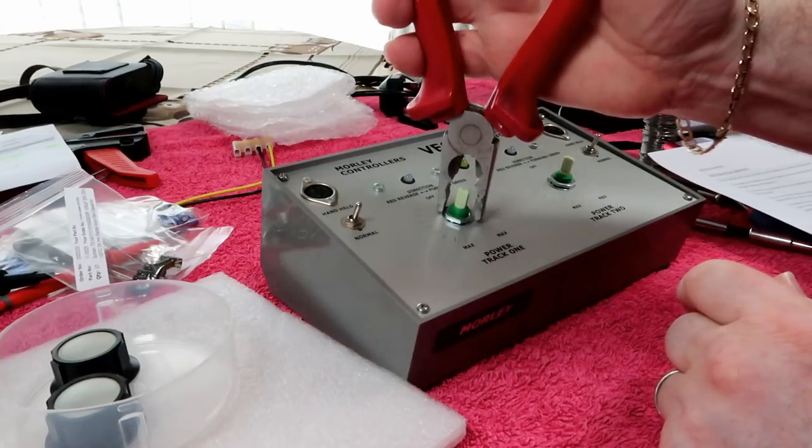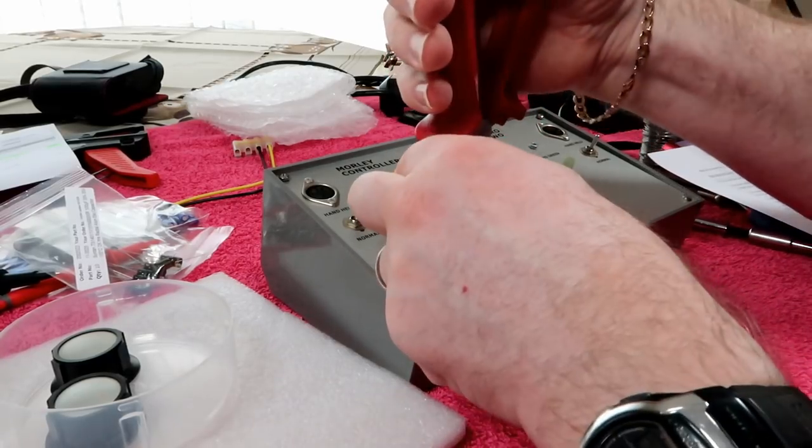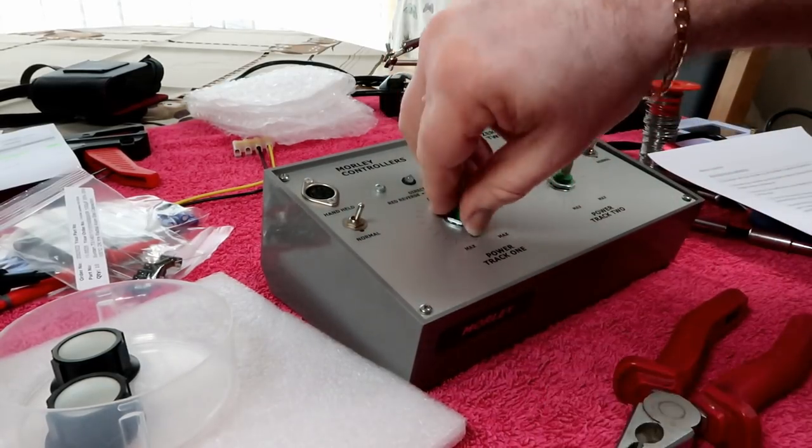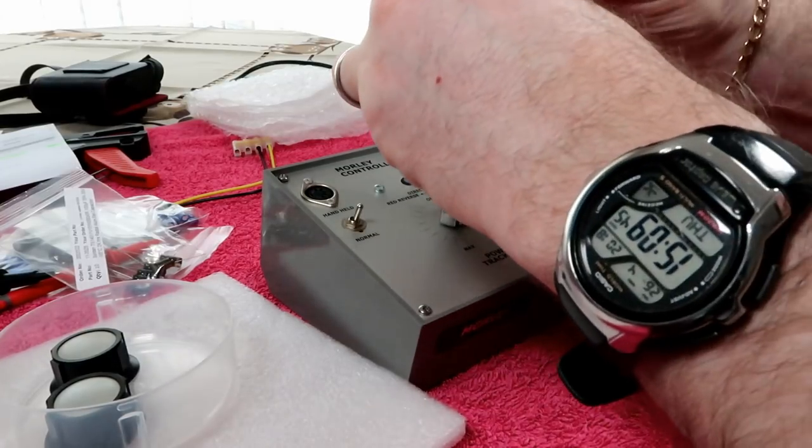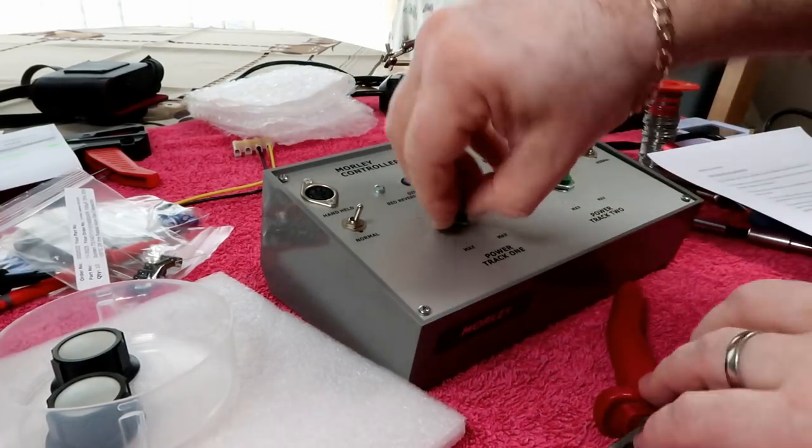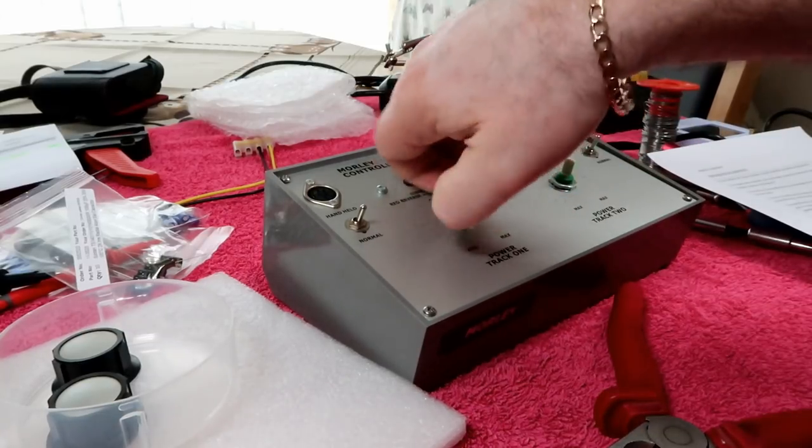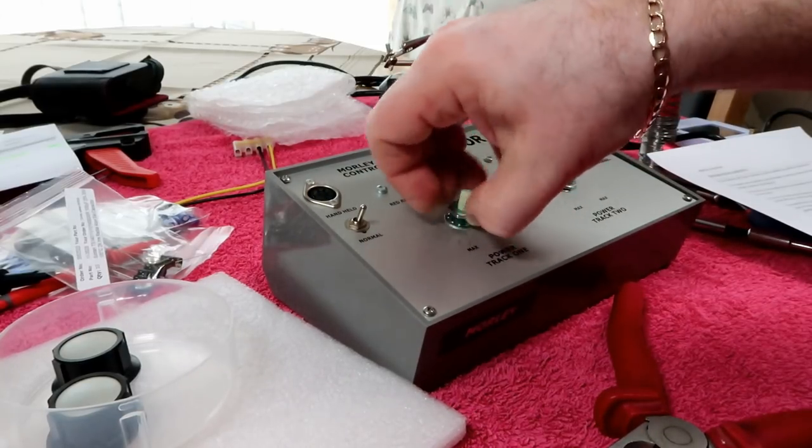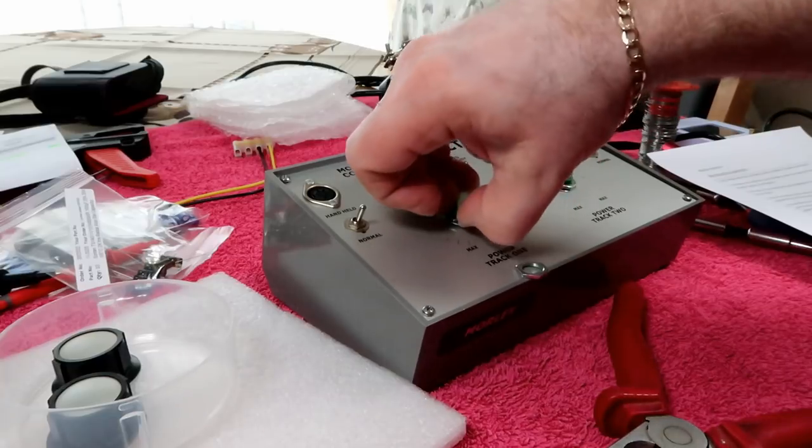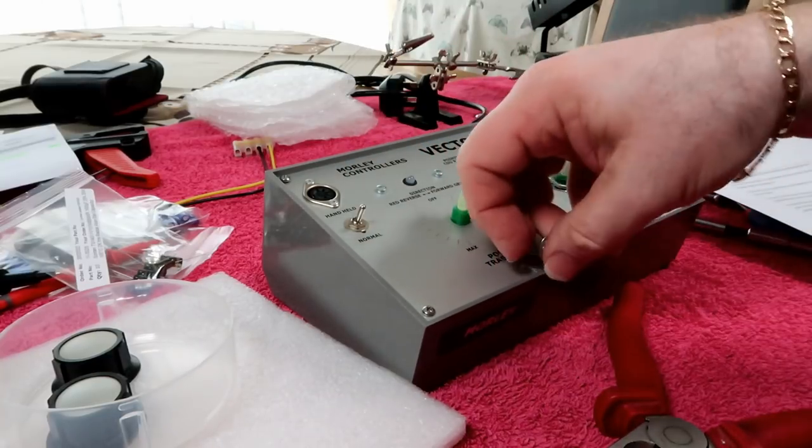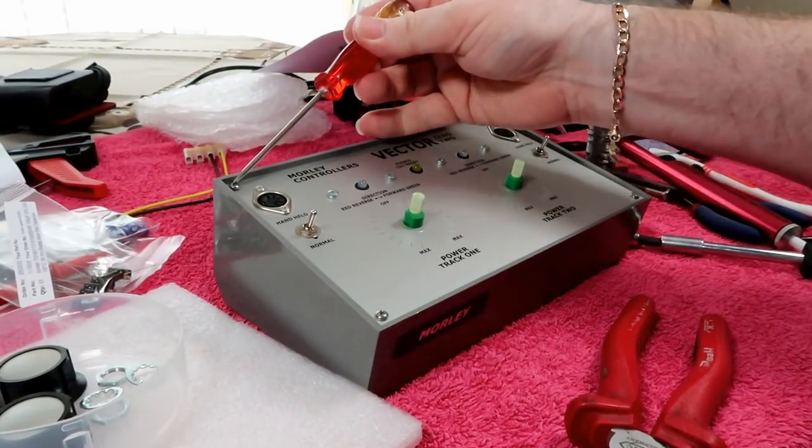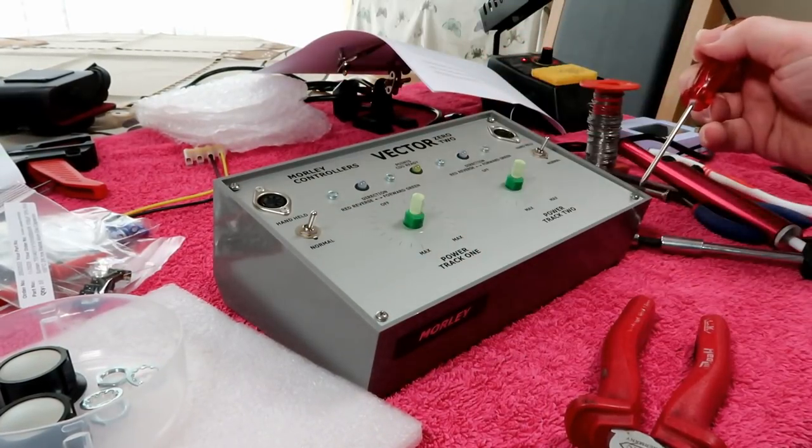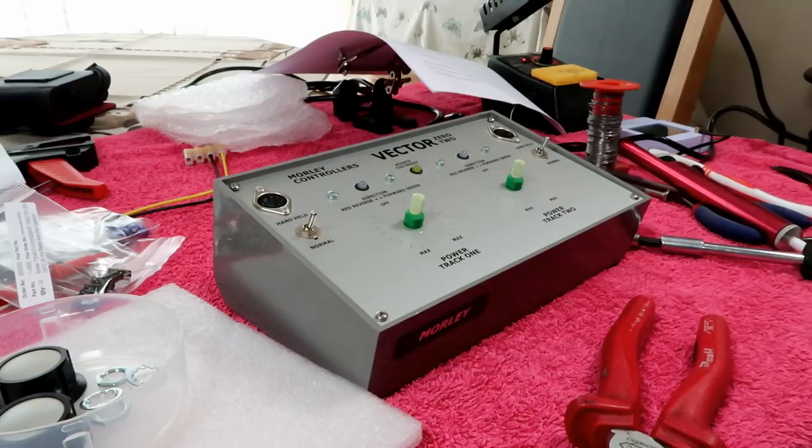Being careful not to scratch the panel, loosen off the retaining nuts on each of the control knobs. You'll find a shakeproof washer under each. Keep everything in a little container on one side. You now need to remove the four crosshead screws from the corners of the control panel.